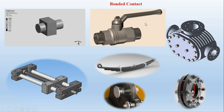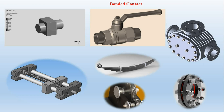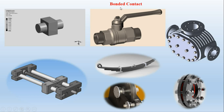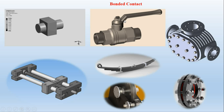This schematic represents a ball valve. For bonded contact, three conditions must be satisfied: no penetration, no separation, and no sliding. The threaded connection between the coupling and pipe can be idealized with bonded contact. Another location for bonded contact is between the rod and the handle at the node connection.